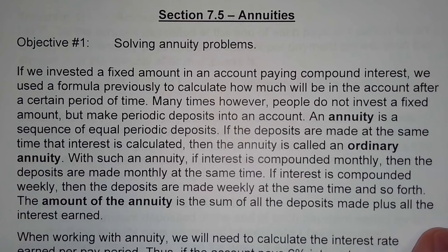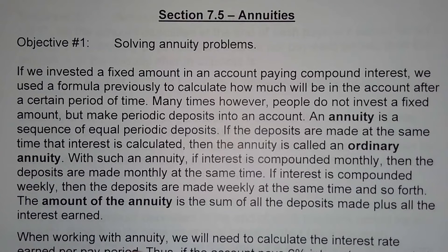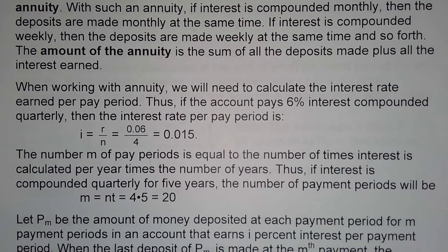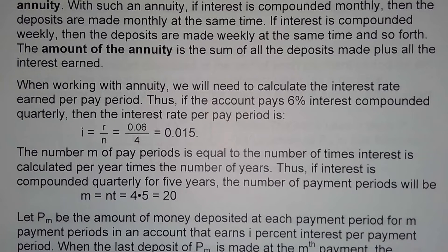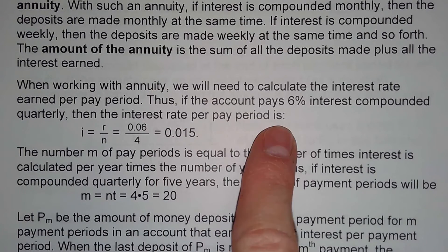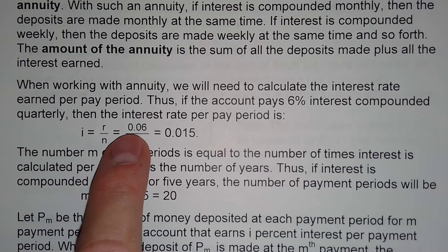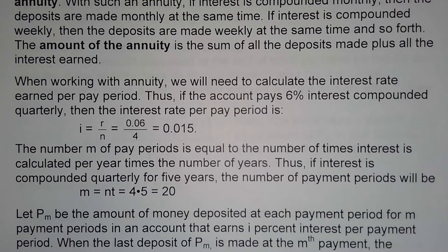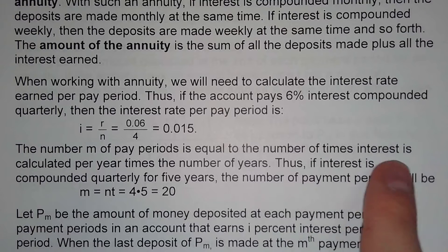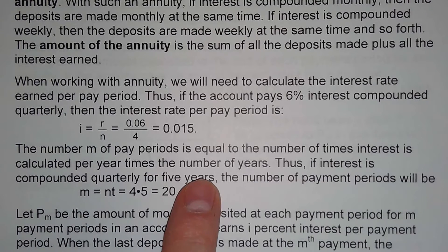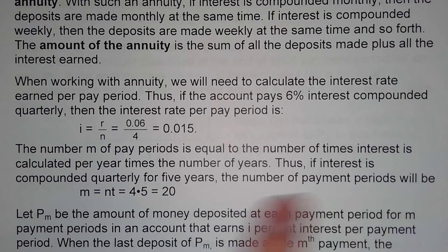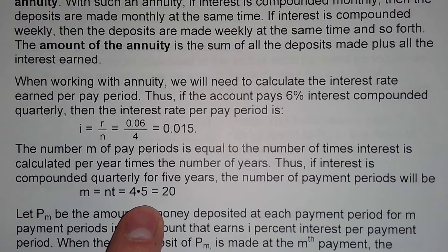The amount of an annuity is the sum of all deposits made plus all the interest earned. When working with an annuity we need to calculate the interest rate earned per pay period. So if an account pays 6% interest compounded quarterly, the interest rate per pay period is i equals r over m, which would be 0.06 over 4, giving us 0.015. The number of pay periods m equals n times t — so if interest is compounded quarterly for five years, m equals 4 times 5, which is 20.